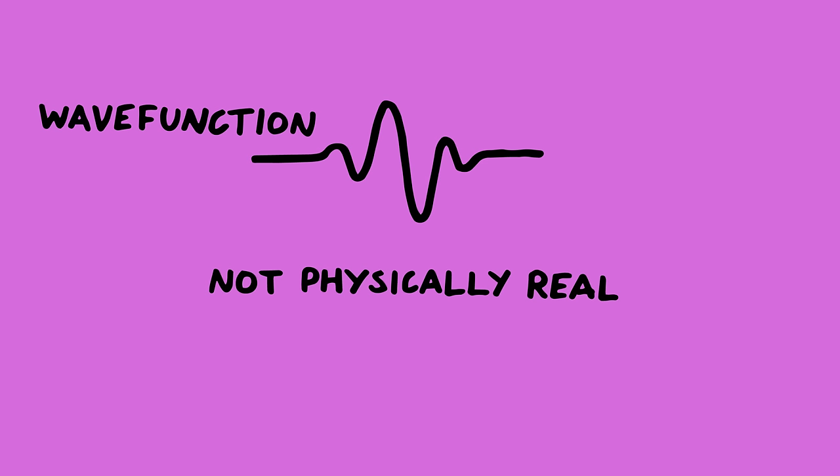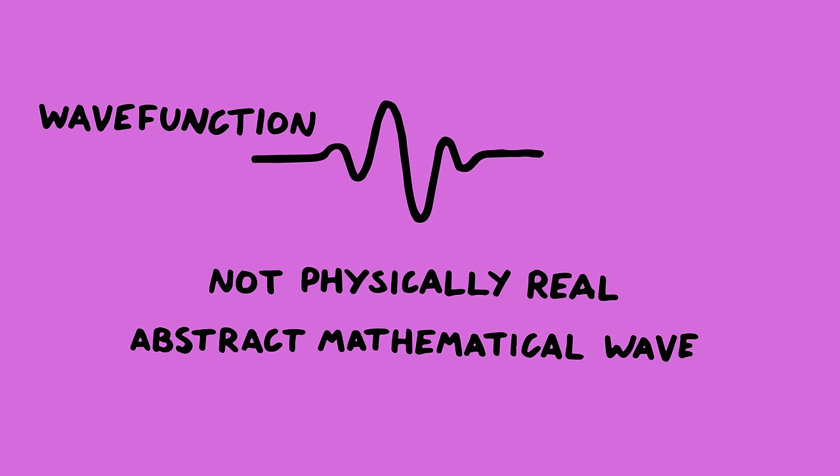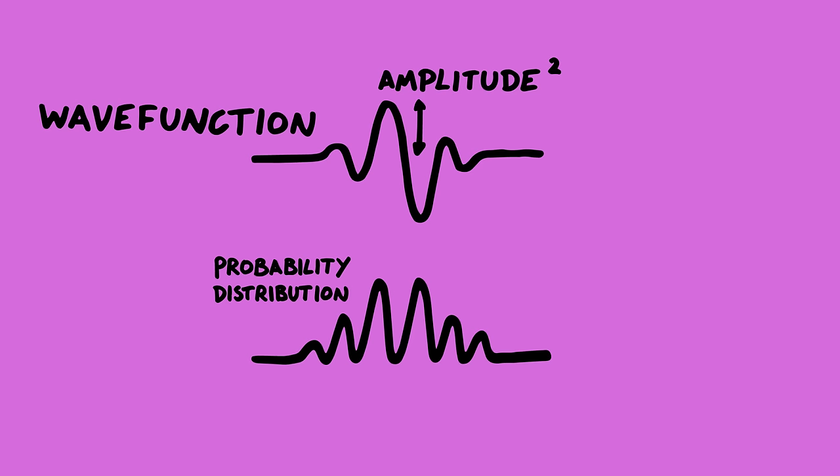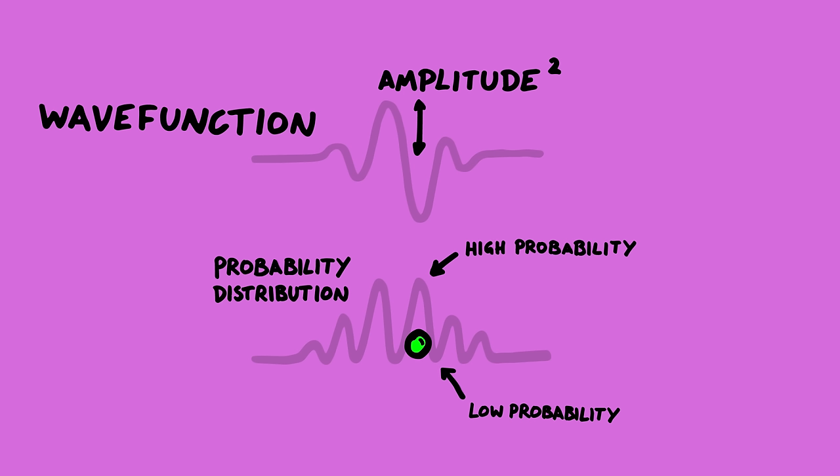But this wave function isn't a real physical wave like a wave on water or a sound wave. A quantum wave is an abstract mathematical description. To get the real world properties like position or momentum of an electron, we have to do mathematical operations on this wave function. So for the position we take the amplitude and square it, which for this wave would look something like this. This gives us a thing called a probability distribution, which tells us that you're more likely to find the electron here than here. And when we actually measure where the electron is, an electron particle pops up somewhere within this area.